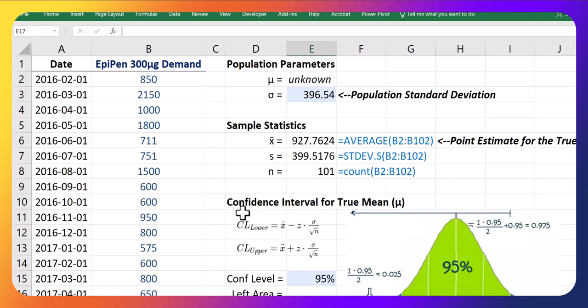In this video, I'm going to go through an example of building up a confidence interval to estimate the true mean when the population standard deviation is known.